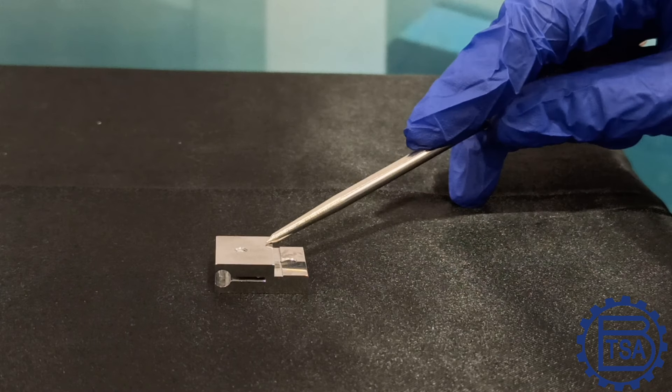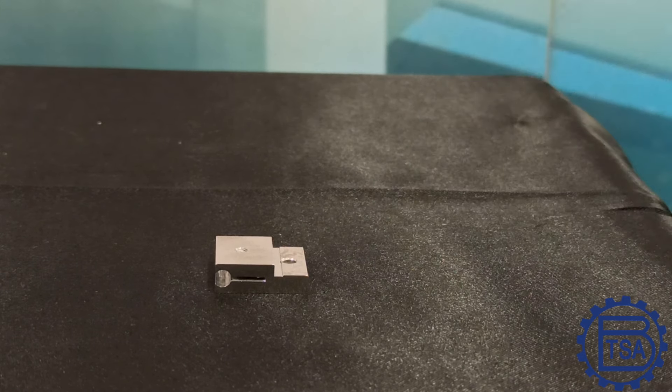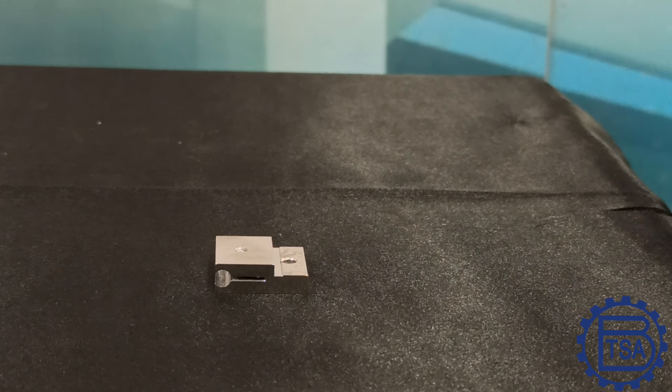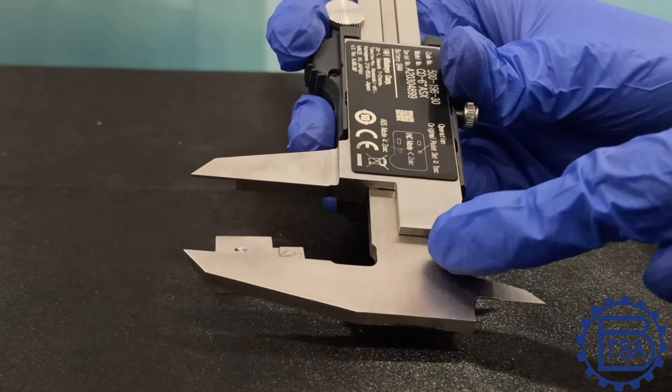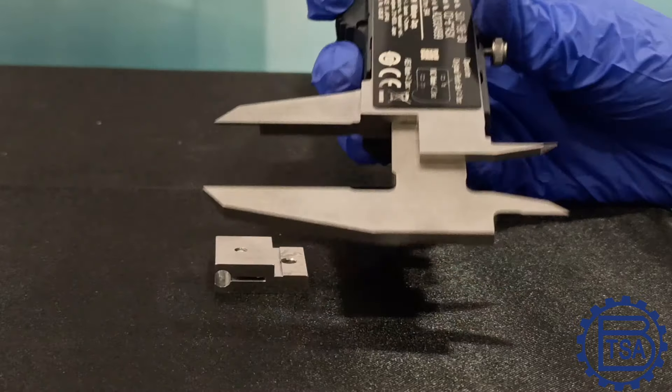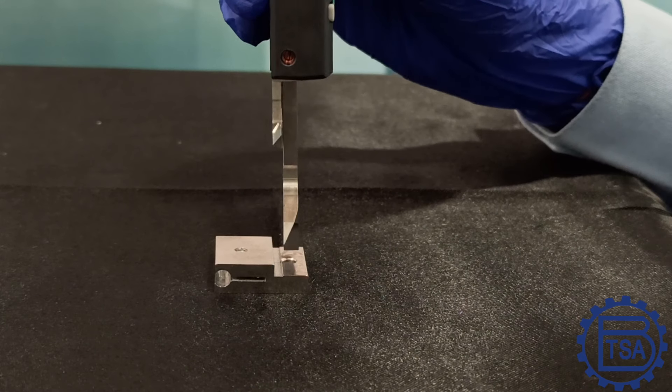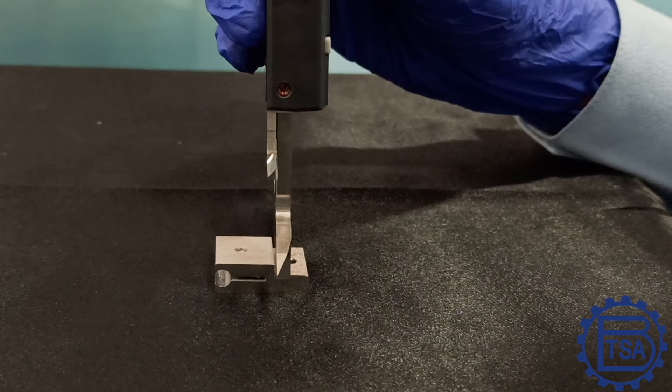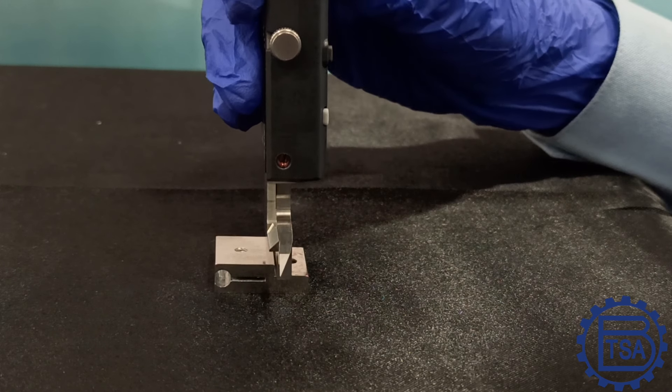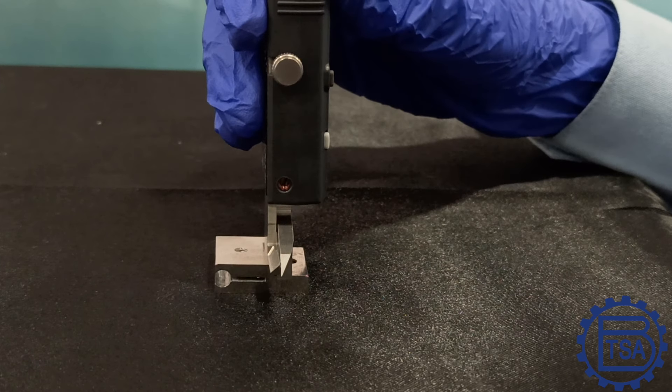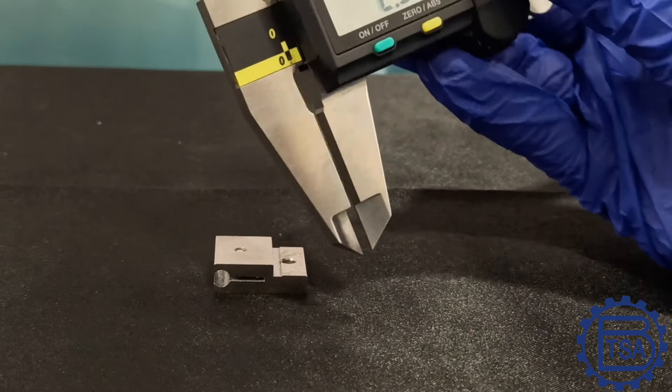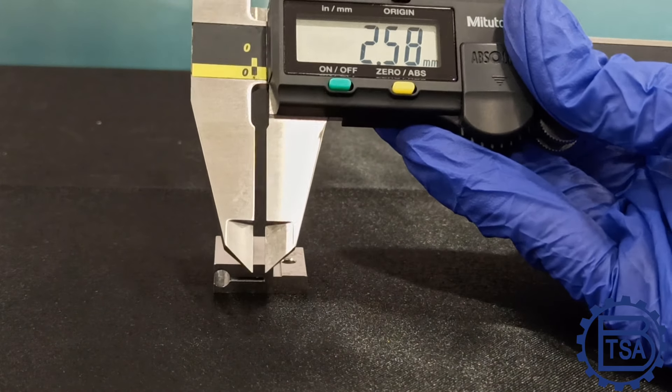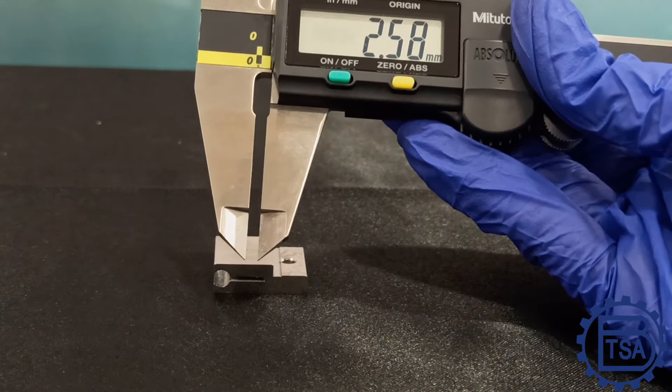Now let's measure the step height of this component using step measuring phases. This is the step measuring phase of the caliper with which we can measure the step height. Position the vernier on one step of the component and measure the height. The step height of this component is 2.58 mm.